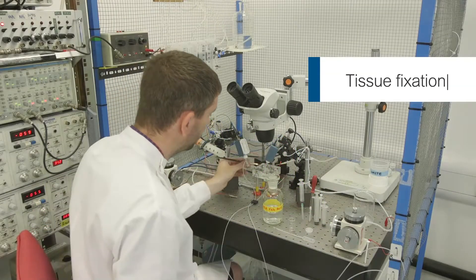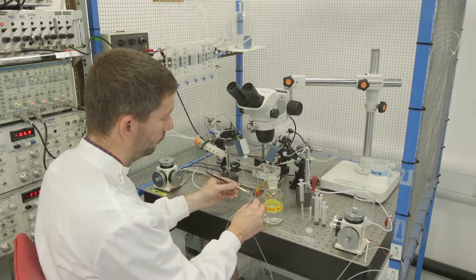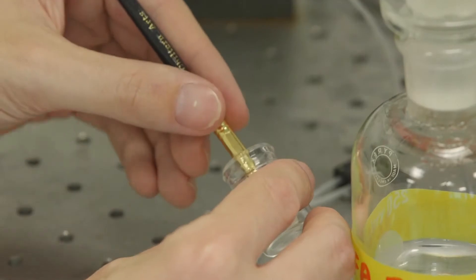Remove the brain slice from the recording chamber and submerge overnight in 4% paraformaldehyde in 0.1 molar phosphate buffer, pH 7.4.